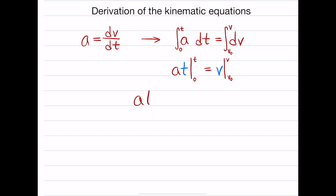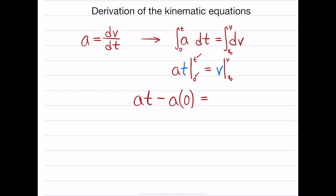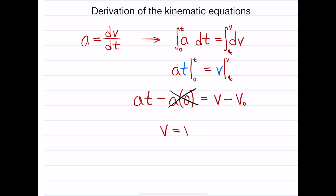Now we actually need to substitute — upper minus lower. We get a·t: substituting t in for t gives us just t. We subtract away from that a times 0, because that's the lower limit. On the right side, we're going to have v minus v₀: substituting v in for v gives just v, and substituting v₀ gives v₀. This term cancels because anything times 0 is 0. With some algebraic rearrangement, we get that final velocity is equal to the initial velocity plus the acceleration times time.